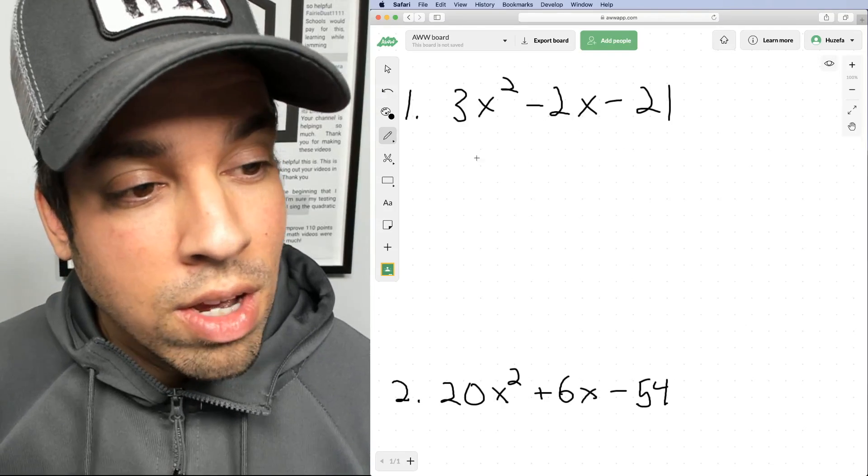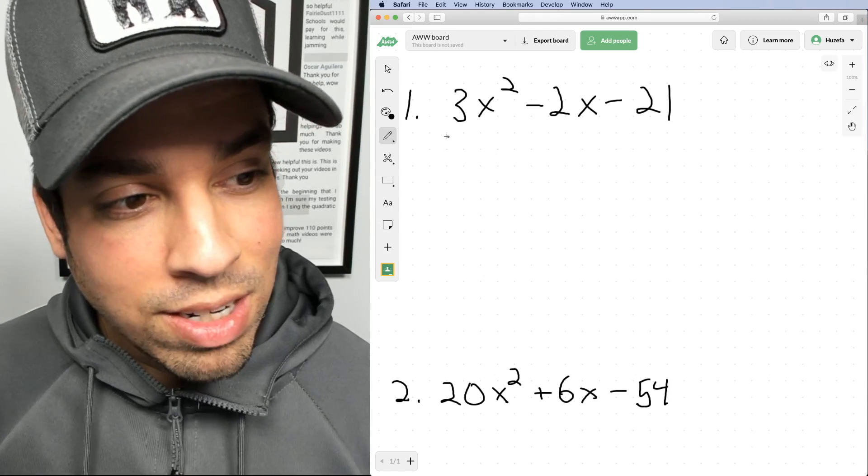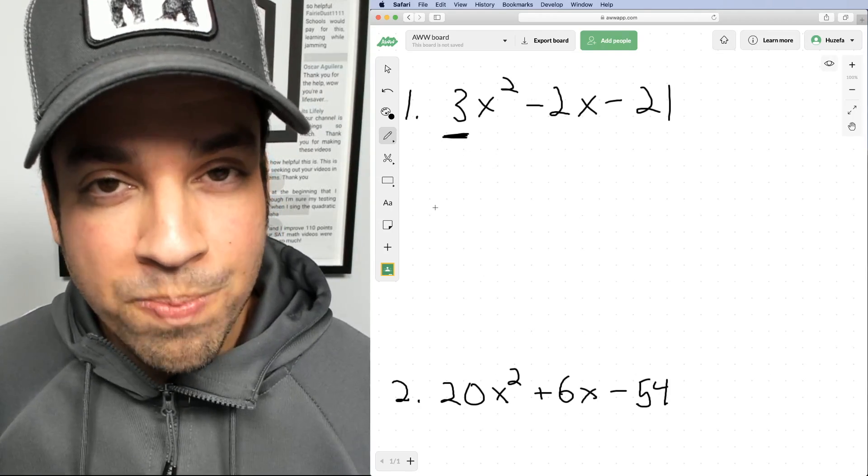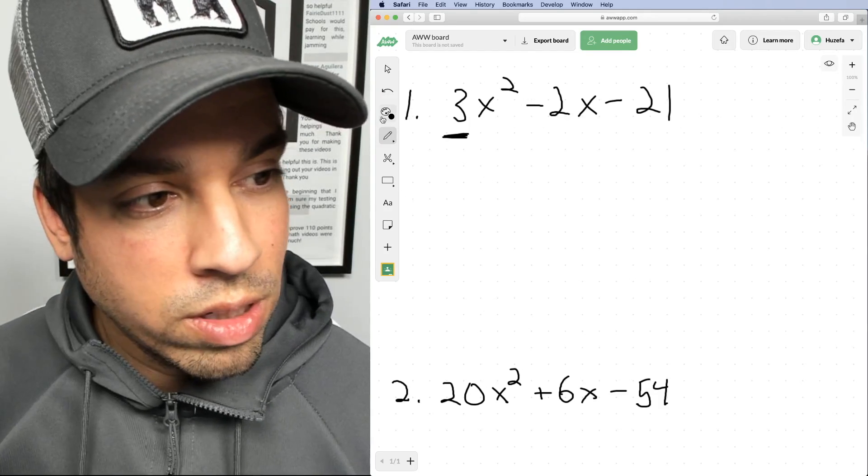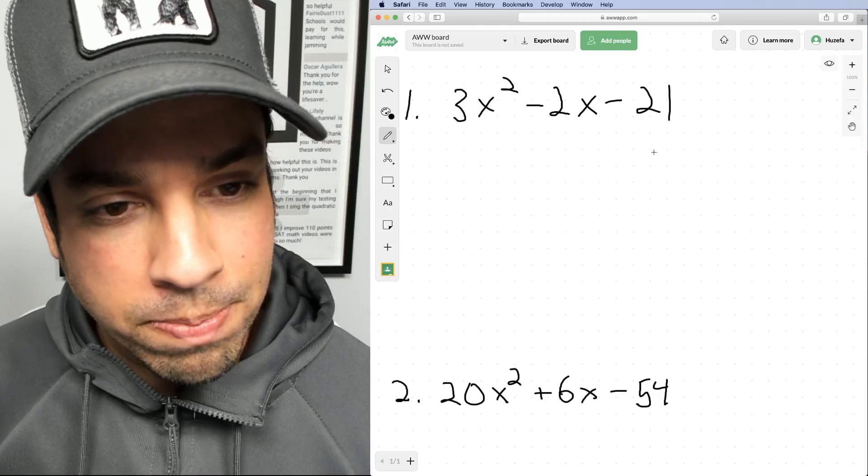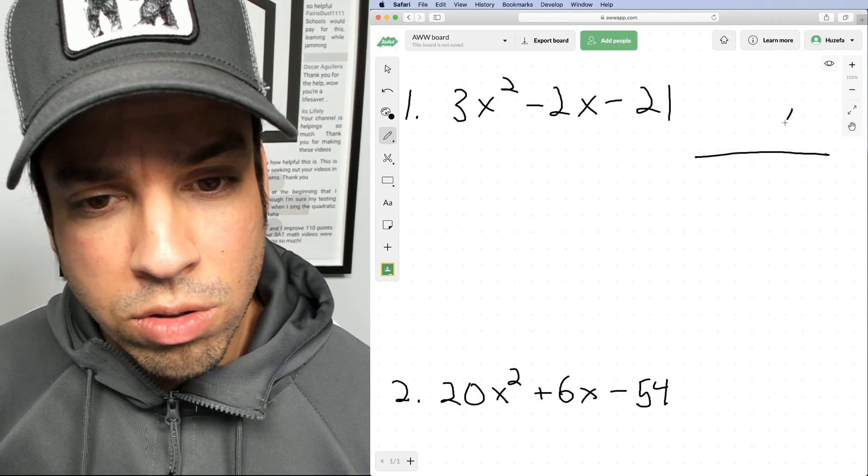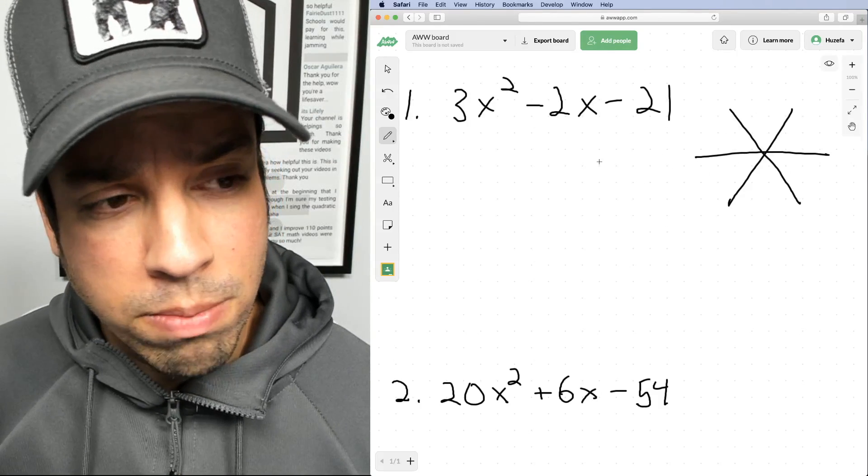Typically we jump right into factoring a quadratic like this, but because there's a leading coefficient, it's a little trickier, there's a few more possible iterations. So the star method helps us do so in a really time efficient manner. Here's how it works. First we create this little star grid like this and I'm going to show you what to place in here.